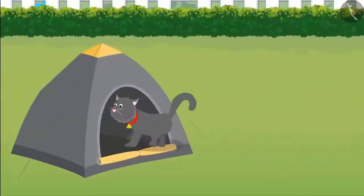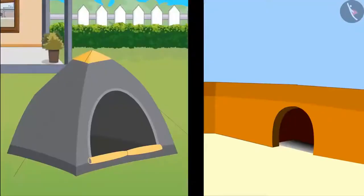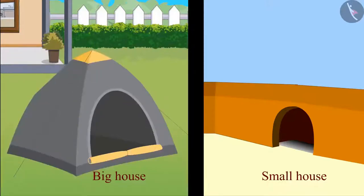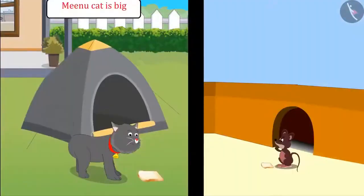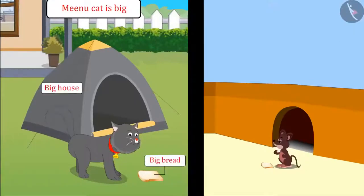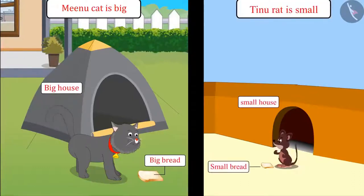Children, here is Minu's house and here is Dinu's house. Can you tell which one of them has a bigger house? Minu's house is bigger than Dinu's house, and Dinu's house is smaller than Minu's house. So kids, Minu cat is big, so she ate big bread and her house is also big. Dinu rat is small, so he took small bread and his house is also small.